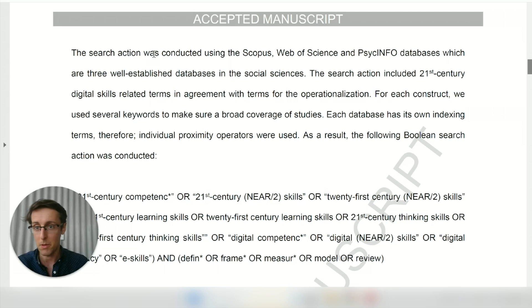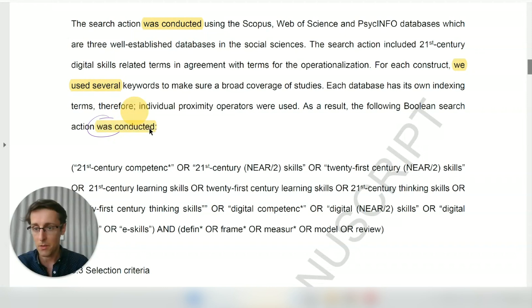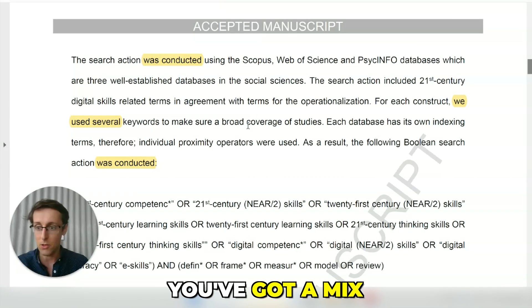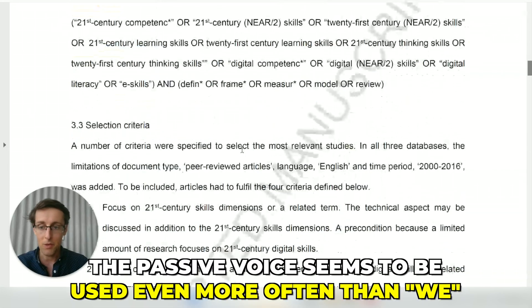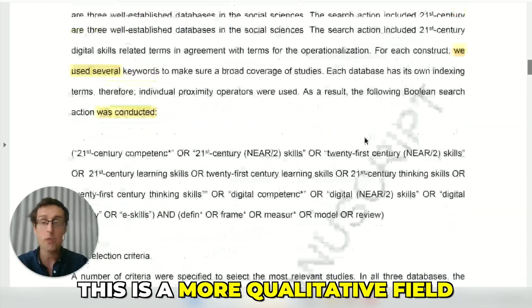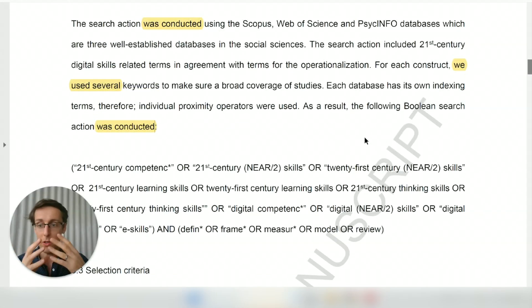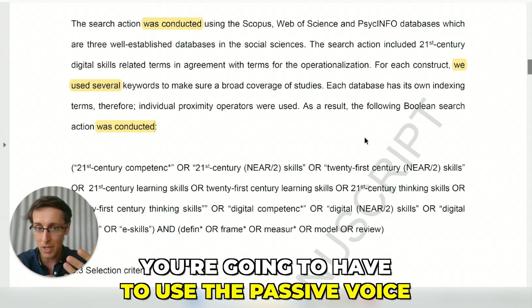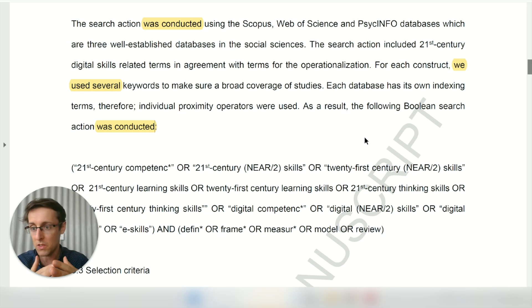We've got was conducted—that's passive voice—and then in here we've got active: we used. I'll highlight that as well for you. And then was conducted—that's passive voice. What you're going to see is that you've got a mix. It's not even 50-50. The passive voice seems to be used even more often than we. As I said, this is a more qualitative field, this is social sciences. So even if you're in social sciences, you're going to have to use the passive voice. You can't start every single sentence with we in the methodology section. It's just not going to fly, believe me, no matter how qualitative your field is.